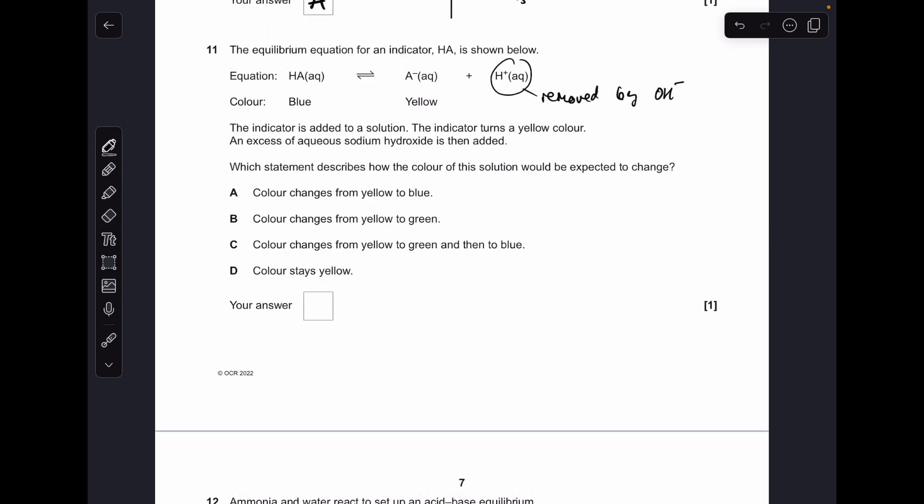Number 11. When you add the sodium hydroxide, the H⁺ ions are going to be removed. So the equilibrium is going to move over to the right hand side. It's going to stay yellow. D was the answer.